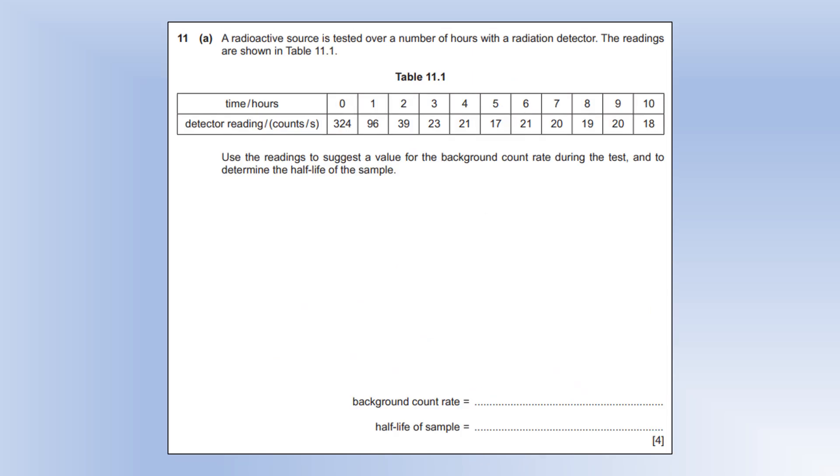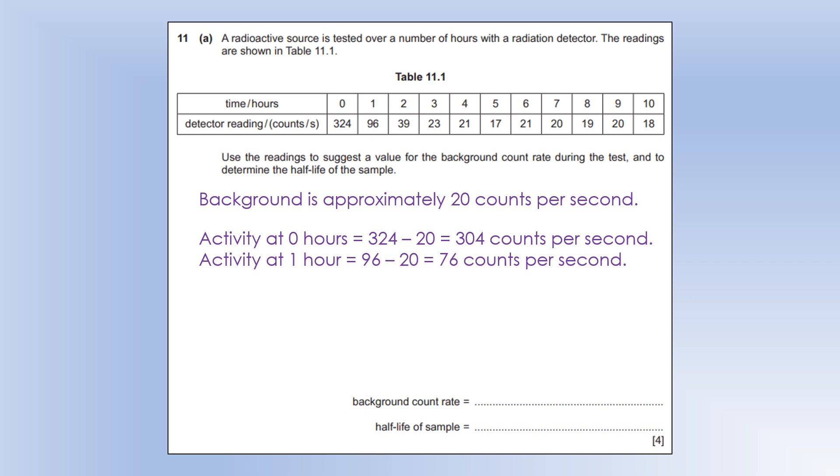A radioactive source is tested over a number of hours with a radiation detector. Use the readings to suggest a value for background count rate and to determine the half-life of the sample. You can see towards the end, all of the values are hovering around the 20 counts per second mark. So, I'm going to say that's what background is. The activity of the sample at the initial time is actually 304, and the activity at one hour is actually 76, just from the sample itself. You can see that over one hour, the activity has become a quarter, which means two half-lives have passed, meaning that one half-life is half an hour.